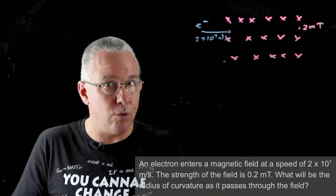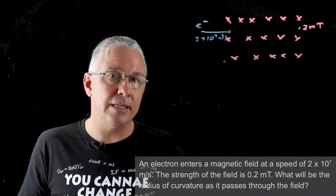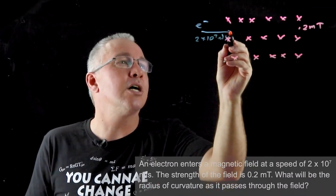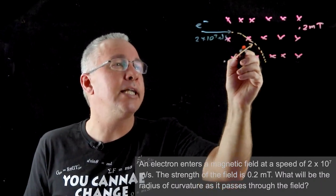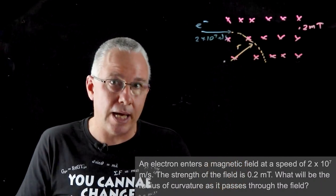Now that charge is going to experience a force, and that force is going to be in the direction of downward. So this is going to turn here like so as long as it stays in the magnetic field, and it's this radius of curvature that we are looking for.